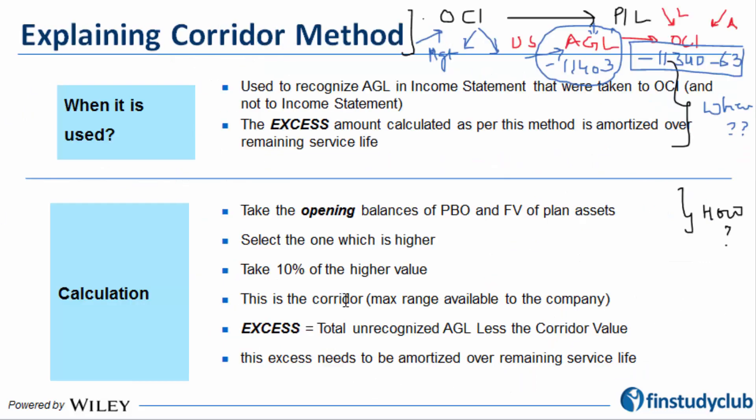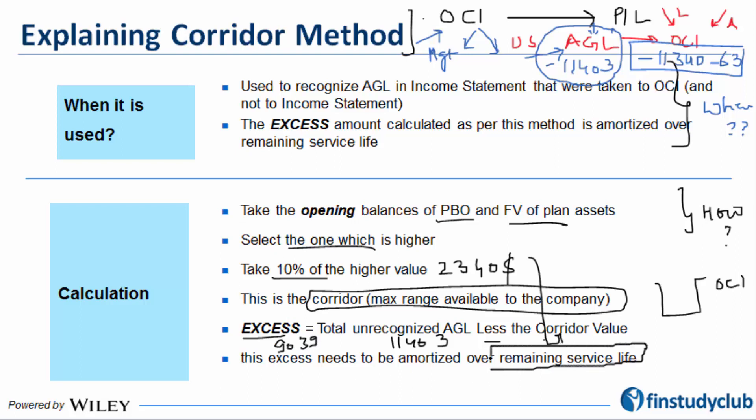Let's read through that slide. Basically it says that whenever you have to amortize, take the opening balances of PBO or plan assets, select the one which is higher, take 10% of the higher value—in this case 2,364—and this is the maximum materiality limit available, up to which we will not have any problem. Let the value keep lying in OCI. But any excess, 11,403 less the corridor value, which is 9,039, is going to be amortized over the remaining service life, which in this case is two years.